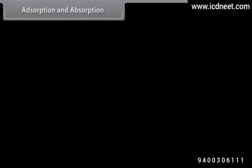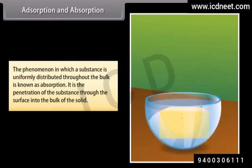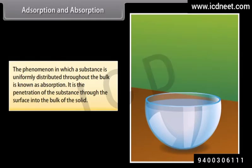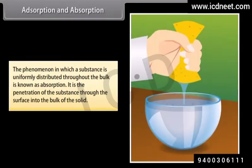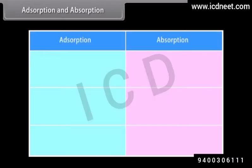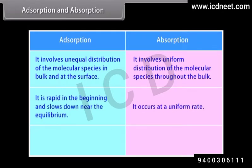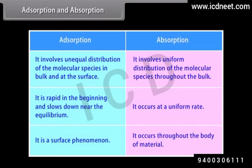The phenomenon in which a substance is uniformly distributed throughout the bulk is known as absorption. It is the penetration of the substance through the surface into the bulk of the solid. For example, when a sponge is dipped in a liquid, it absorbs some molecules of liquid. Adsorption involves unequal distribution of the molecular species in bulk and at the surface, whereas absorption involves uniform distribution throughout the bulk. Adsorption is rapid in the beginning and slows down near equilibrium, whereas absorption occurs at a uniform rate. Adsorption is a surface phenomenon, whereas absorption occurs throughout the body of material.